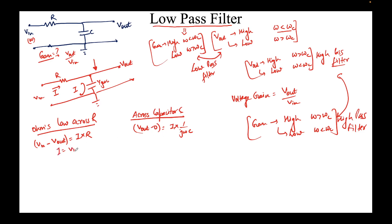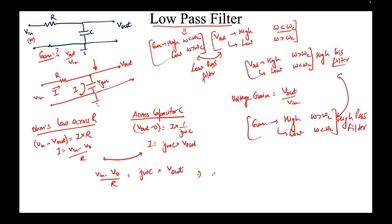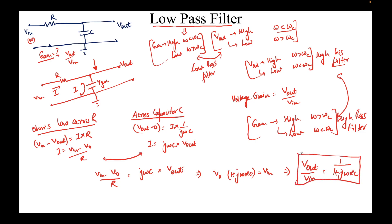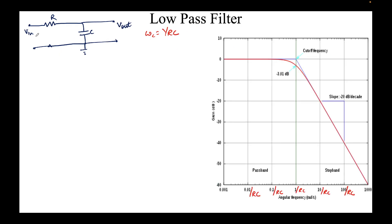From the resistor expression, I can find i = (V_in − V_out) / R, and from the capacitor expression, i = j*omega*C times V_out. Equating these two expressions: (V_in − V_out) / R = j*omega*C * V_out, where omega is the frequency of oscillation. Rearranging terms gives V_out * (1 + j*omega*R*C) = V_in.